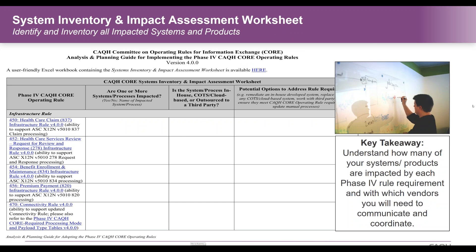The System Inventory and Impact Assessment Worksheet enables you to identify and inventory all impacted systems that process transactions touched by the operating rules. This worksheet will identify systems impacted by implementation, including in-house developed and maintained systems, off-the-shelf systems, or those functions outsourced to a third-party vendor. You should also consider potential options such as remediating in-house systems, replacing or upgrading an off-the-shelf system, or contacting your trading partner to revise your agreements.